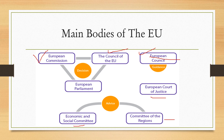The third body is the Council of the European Union, sometimes called the Council of Ministers. It negotiates and adopts legislative acts, most of the time together with the European Parliament. It also coordinates economic and security policies.